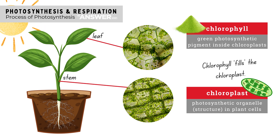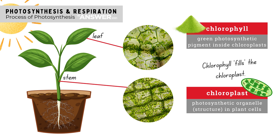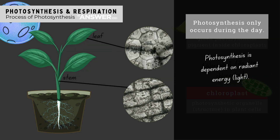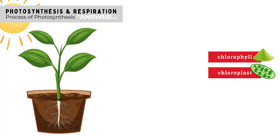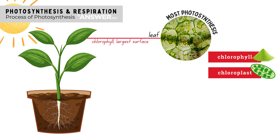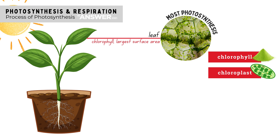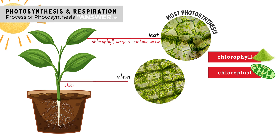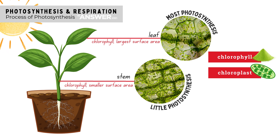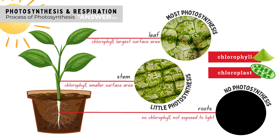Chlorophyll is responsible for trapping and absorbing the radiant energy from the sun that is used for photosynthesis. Without the radiant energy, photosynthesis cannot occur, so photosynthesis is dependent on light and can therefore only occur during the day. Only the green parts of a plant have chloroplasts with chlorophyll, so only the green parts can photosynthesize. The leaves have the largest surface area exposed to the sun, so most photosynthesis occurs within the leaves. Stems may be green but their surface area is very small, so little photosynthesis occurs there. Roots are not green nor exposed to light, so no photosynthesis occurs in the roots.